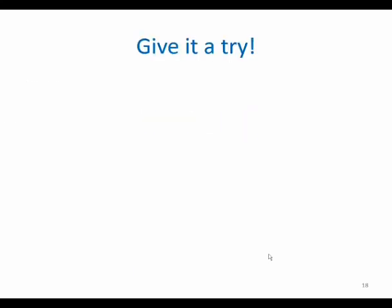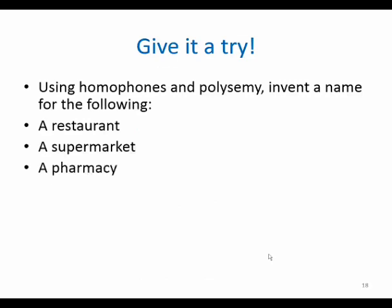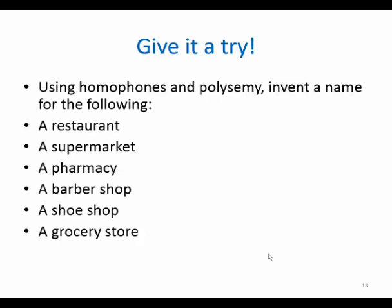And finally, let's end the lecture with an exercise. Give it a try. Using homophones and polysemy, invent a name for the following: number one, a restaurant; number two, a supermarket; number three, a pharmacy; number four, a purple shop; number five, a shoe shop; number six, a grocery store; and number seven, a fitness center. I hope you try this and write your answers in the comments below. Thank you.